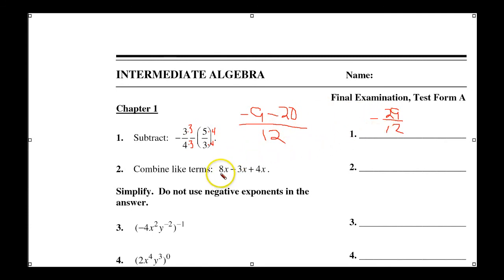Now, the technique for combining like terms, they're all x to the first power, so these are like terms. We can add our 8 and 4 together to get 12, minus 3 would give us 9x. So some very basic items here.